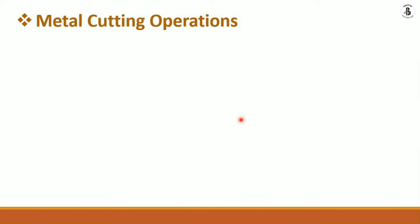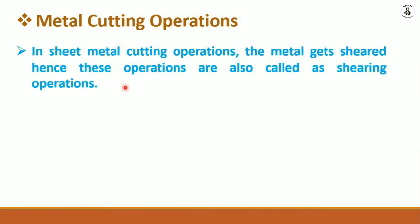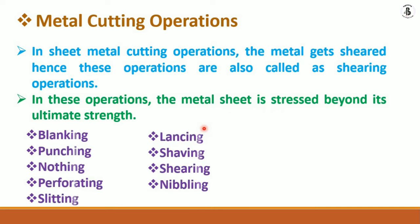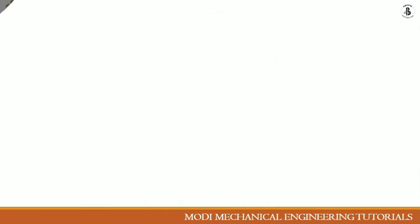In sheet metal cutting operations, the metal gets sheared, so these operations are also called shearing operations. The sheet metal is stretched beyond its ultimate strength. The various cutting operations include blanking, punching, notching, perforating, slitting, lancing, shaving, shearing, and nibbling. We will now discuss each operation one by one.